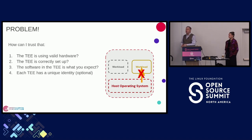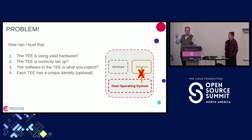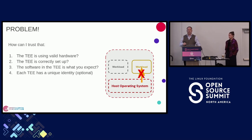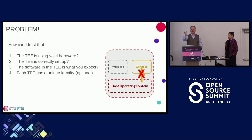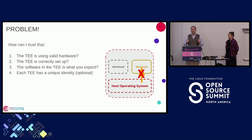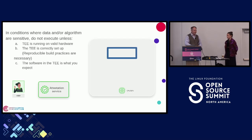But we have a problem: how can you be sure that this trusted execution environment is actually doing it right? How can we be sure it's using valid hardware that's been correctly set up, and that the software you're running is what you think it should be? Each TEE has a separate identity — you want to know that each is protected and unique. But if I don't trust the hardware in the first place, how does this work? This brings us to the next word: attested.